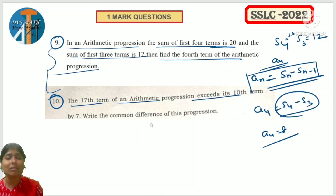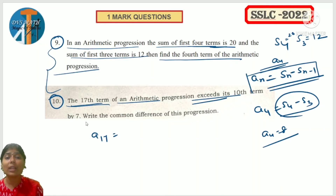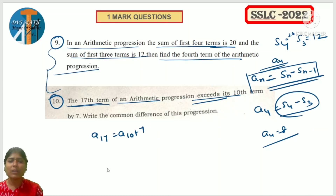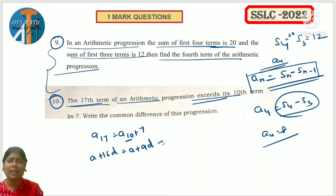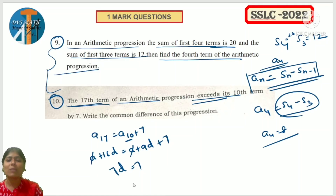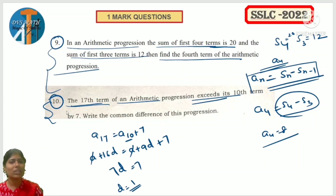The 17th term of an arithmetic progression exceeds its 10th term by 7. Find the common difference. A17 exceeds A10 by 7 means A17 equals A10 plus 7. So: a plus 16d equals a plus 9d plus 7. Cancel 'a' on both sides: 16d minus 9d equals 7, so 7d equals 7, therefore d equals 1.